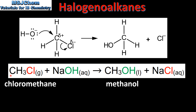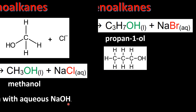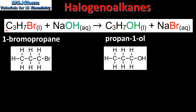Here we have the overall equation for the reaction. We have chloromethane reacting with sodium hydroxide to form methanol and sodium chloride. The conditions for the reaction are warm with aqueous sodium hydroxide. In another example, 1-bromopropane reacts with sodium hydroxide to form propan-1-ol and sodium bromide.